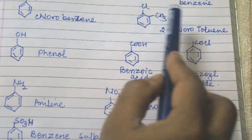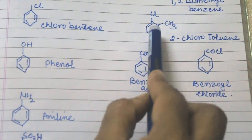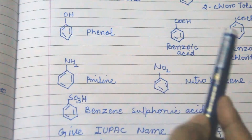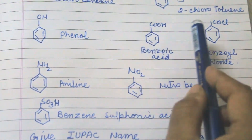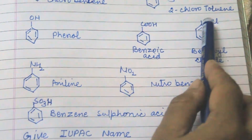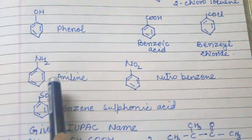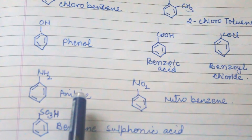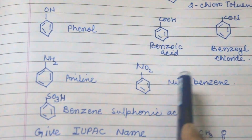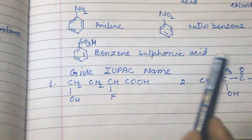When a chloro group is attached with CH3 it is known as 2-chlorotoluene — toluene is benzene with CH3, and this is the chloro group. When OH is attached to benzene it is phenol. When COOH is attached it is benzoic acid. When COCl is attached it is benzoyl chloride. When NH2 is attached it is aniline. When NO2 is attached it is nitrobenzene.